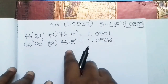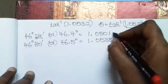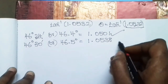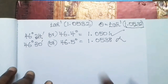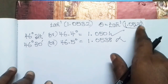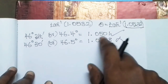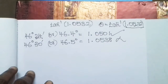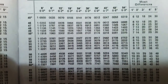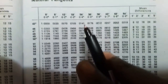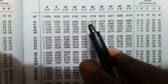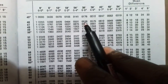If we have the next value, that gives 46.5 degrees, or 46 degrees 30 minutes, corresponding to 1.0538. So our target value 1.0532 lies between 1.0531 and 1.0538. We need to look at mean differences. The difference value we need to work with is between 31 and 38.